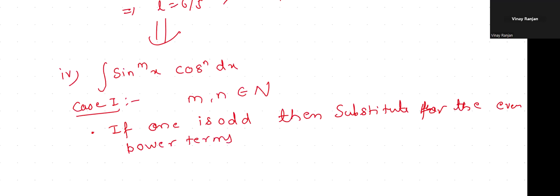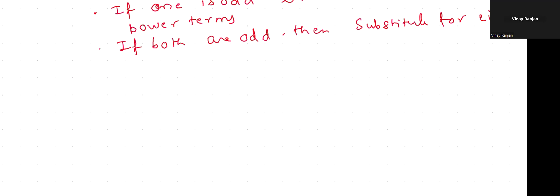If both are odd, then substitute for either of them. If both are even, then use trigonometric identities.